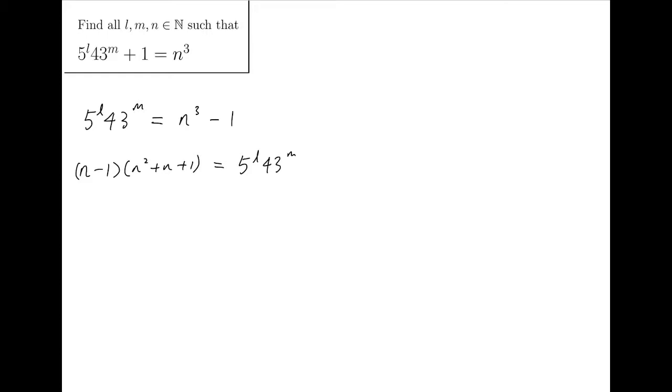The next question is, whether N minus 1 and N squared plus N plus 1 can both have factors of 5 or both have factors of 43? Whenever we come across this kind of question, we may take a look at the GCD, the greatest common divisor of the two expressions. Even if they are not numbers, we may still run the Euclidean algorithm aiming to reduce the degree of the polynomials.